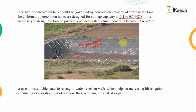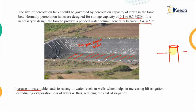Generally, the ponded water column — the height of water stored in the percolation tank — is between 3 to 4.5 meters. As water percolates, the rising water table increases the water level in wells. This leads to increased lift irrigation, which reduces evaporation loss and therefore reduces the cost of irrigation, because it reduces the height up to which we need to supply water. If we get that height naturally, the cost of irrigation will be reduced.